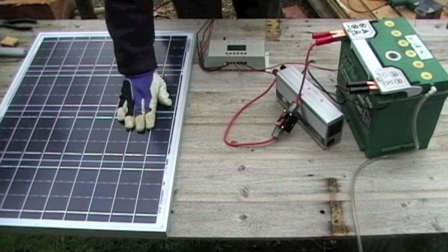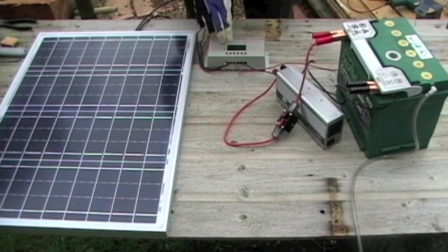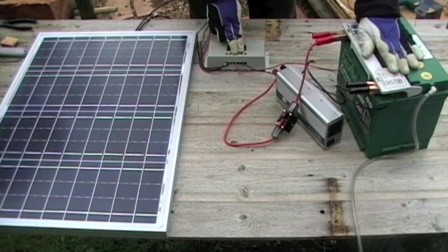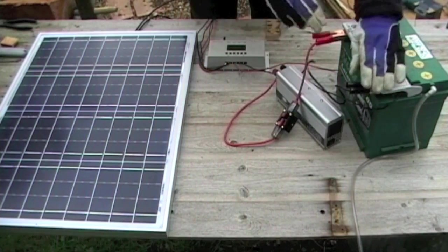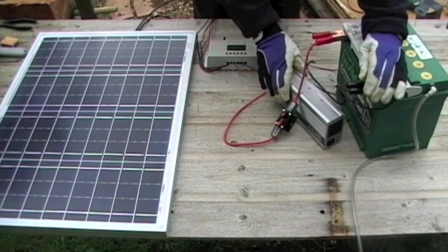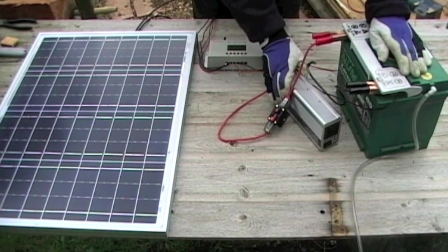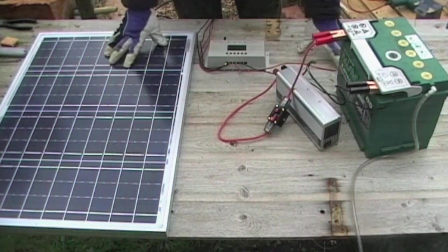So I now have my solar panel connected to the charge controller. And it's charging the battery. Then connected to the battery is the inverter, with the circuit breaker in there for added protection. The inverter and the breaker together cost about £36.